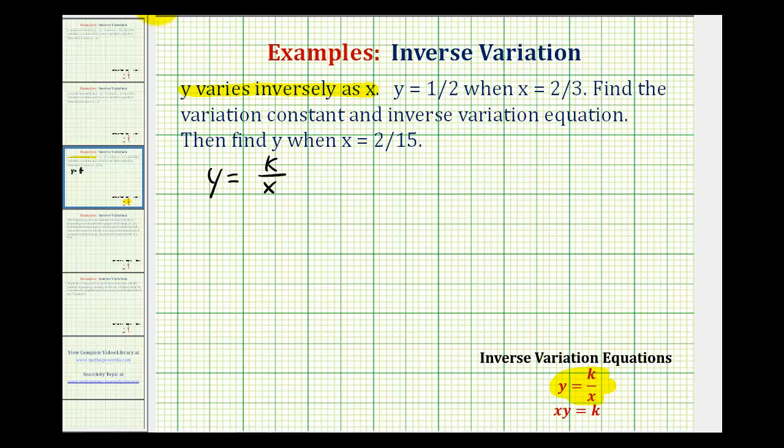If we take a look at this equation here, notice if we multiply both sides of the equation by x, we would have x times y, or xy equals, and then on the right, x over x simplifies to ones, so we just have k.